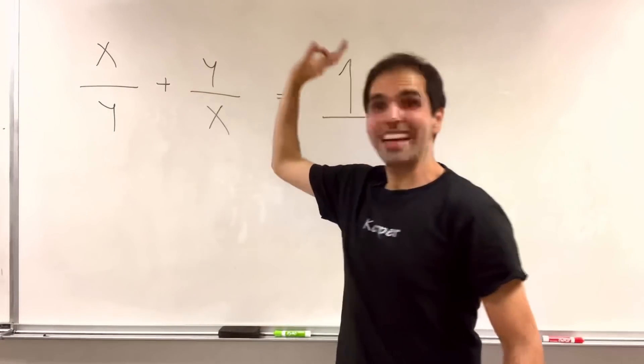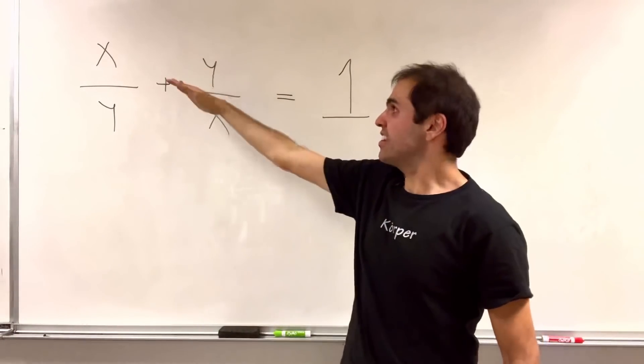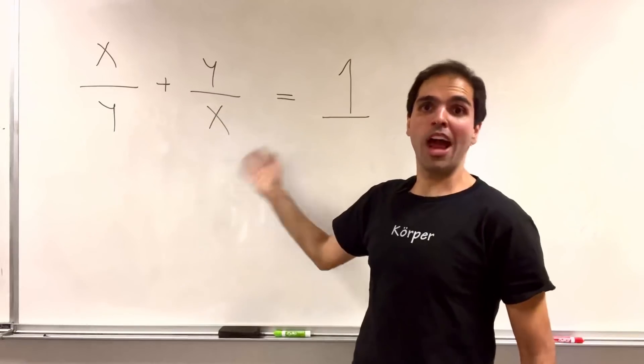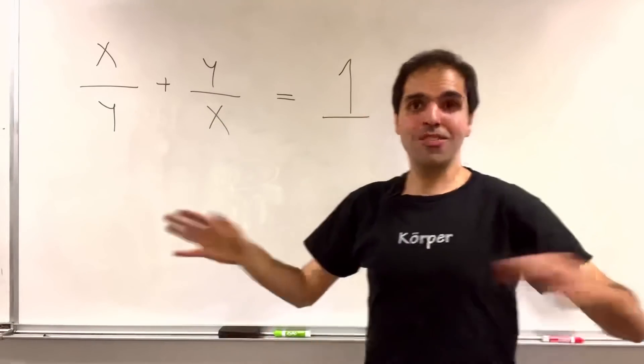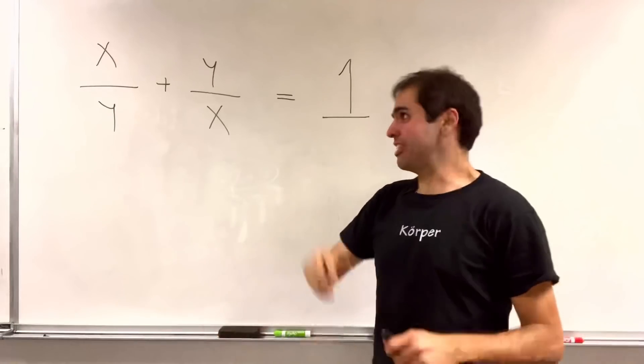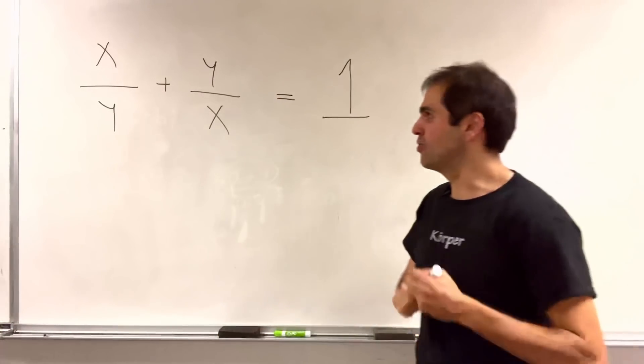In other words, can we find x and y such that x over y plus y over x equals 1? Certainly not 5 and 3, but maybe there are other solutions to this.